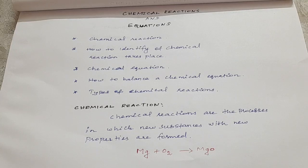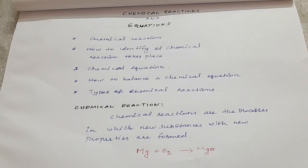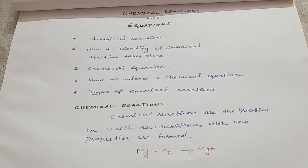First heading: Chemical Reaction. Chemical reactions are the processes in which new substances with new properties are formed. One or more substances react together to form a new product. That product is entirely different from the reactants, and the properties of the substances are entirely changed.